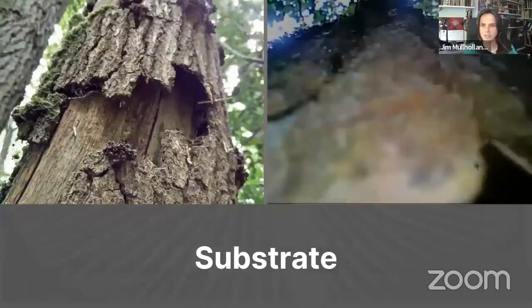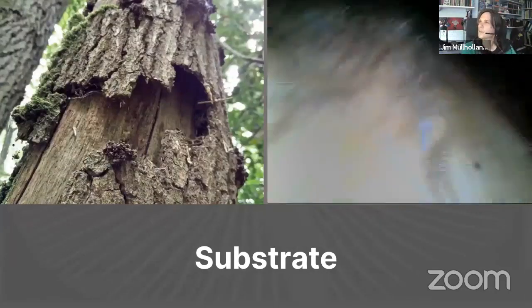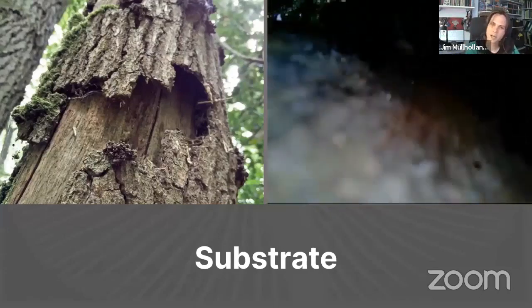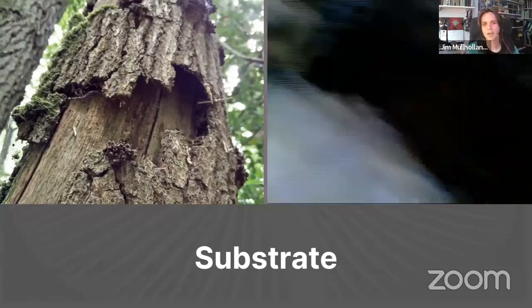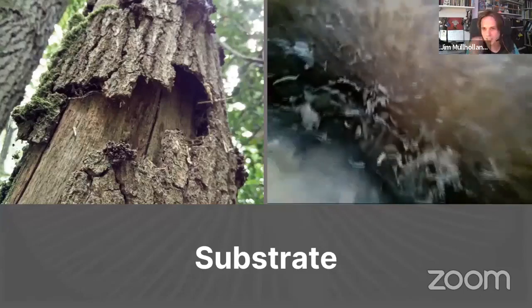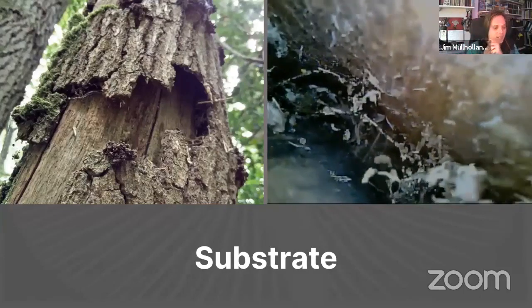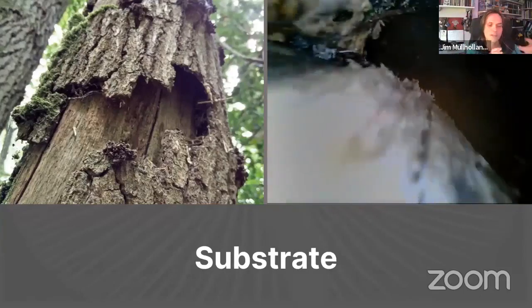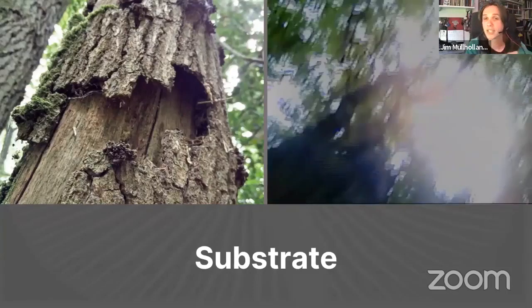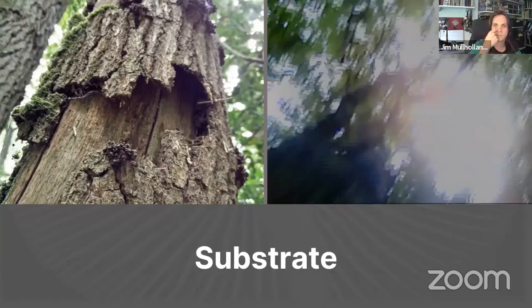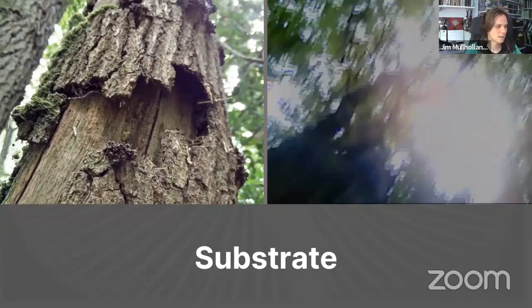One exception is flaking bark. Whenever you look under flaking bark you see loose detritus, and it never develops that clean, smooth, polished substrate — because before it has a chance to do that, the piece of bark falls off. So flaking bark presents particular challenges when assessing substrate condition.